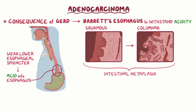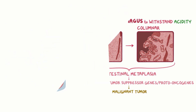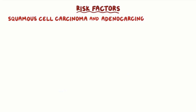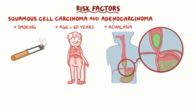Over time, just like with squamous cell carcinoma, mutations might accumulate in either tumor suppressor genes or proto-oncogenes that control the division of these metaplastic cells, ultimately resulting in a malignant tumor. Risk factors for both squamous cell carcinoma and adenocarcinoma include smoking, age over 60 years, and achalasia, which is when the smooth muscle of the lower portion of the esophagus doesn't work well, making it difficult for food to pass toward the stomach.